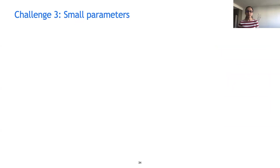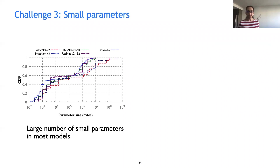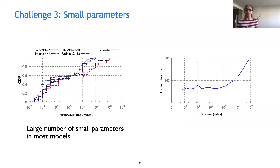A third challenge arises from system overheads associated with transferring small parameters. We observed that 50 to 60% of parameters are small — smaller than 100 kilobytes. When benchmarked, a 100-byte transfer and a 100-kilobyte transfer take nearly the same time due to overheads at small sizes. So a large number of small parameters can incur significant overheads. These are the three main problems in the all-reduce setting.